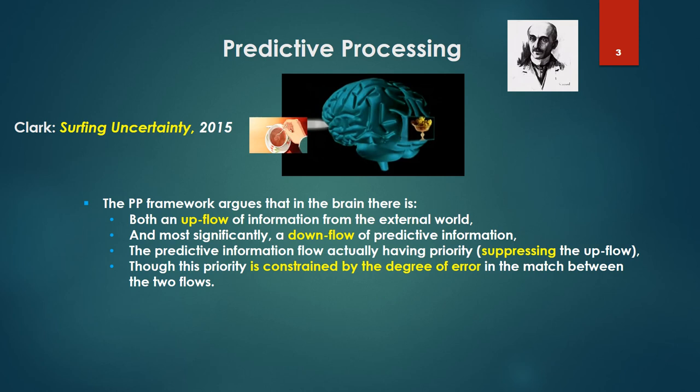Now if I slide over to another book by Andy Clark, Surfing Uncertainty in 2015, pretty much the same as Howie, he notes that the PP framework is arguing that in the brain, there is both an upflow of information from the external world, from our external coffee cup being stirred, and most significantly, a downflow of predictive information. And the predictive information flow, our green arrow there, actually has priority or suppresses the upflow. Though this priority is constrained by the degree of error in the match between the two flows. So if there's a significant difference between the two flows, then the upflow retains its superiority or priority.